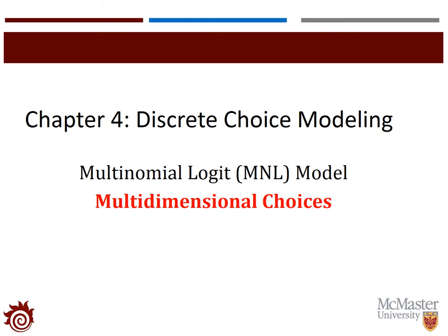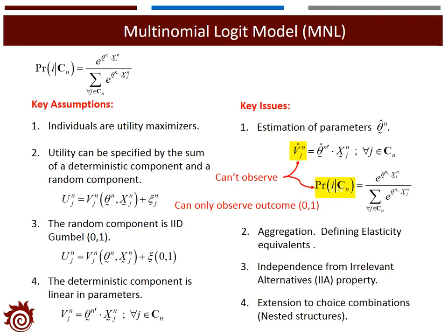In this video, we will continue lecture 9 and introduce nested structure for multi-dimensional choices. Here is the quick summary about the MNL model. It contains key assumptions and issues. We have already solved the first three issues in the previous lectures. And now we'll go to the last one: extension to the choice combination, where we will introduce the nested structure.